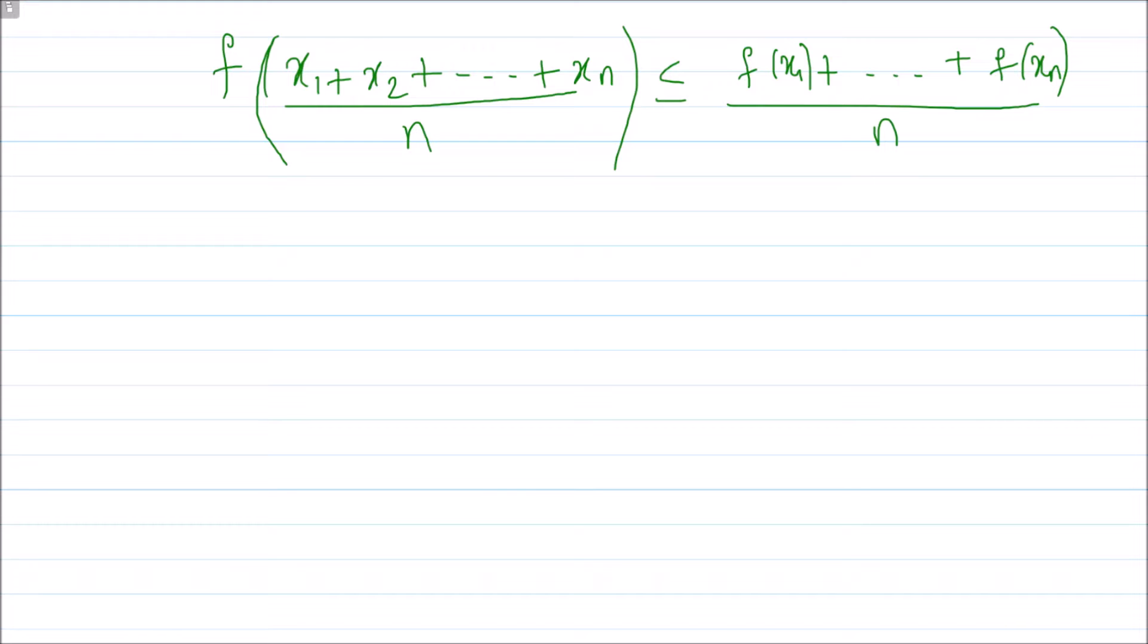Jensen's inequality says that if you have a function f which is a convex function, or concave up over the interval I, and you take the points x₁ to xₙ belonging to I, then your f satisfies this inequality.